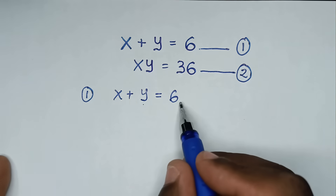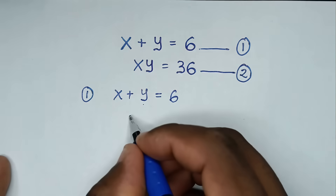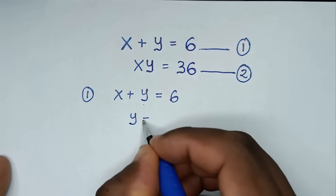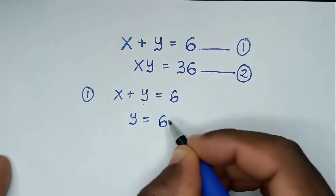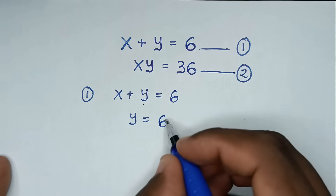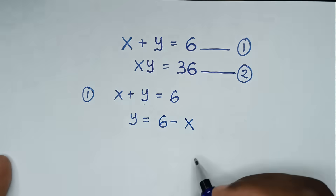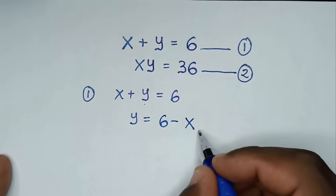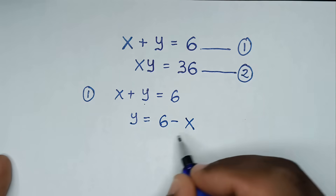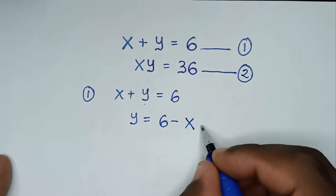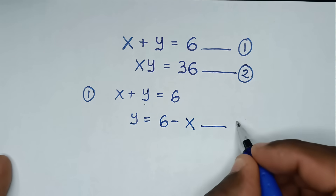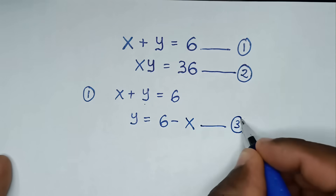We take x to the right side, so y is equal to 6 minus x. This equation in terms of y, let's call this equation 3.